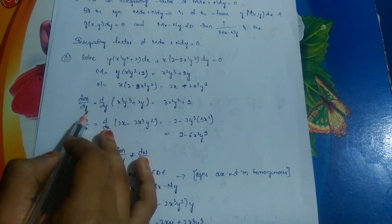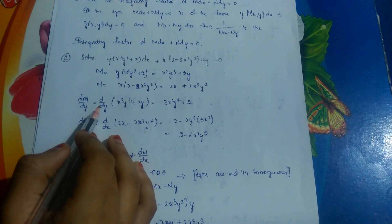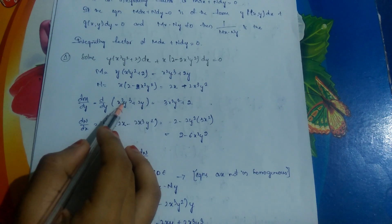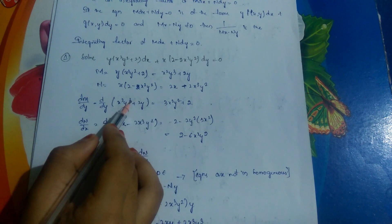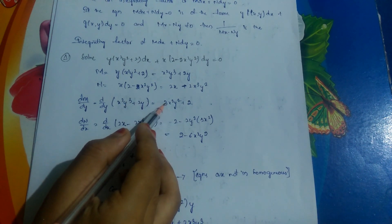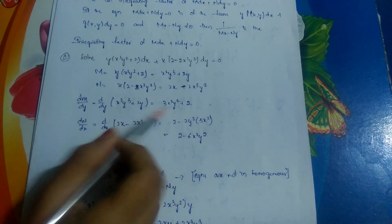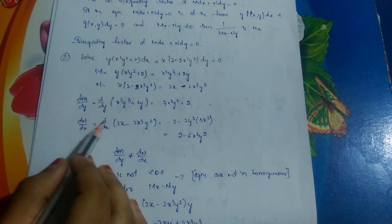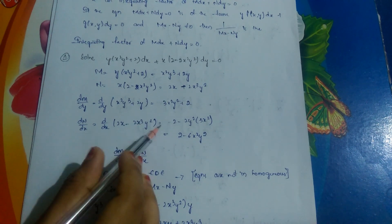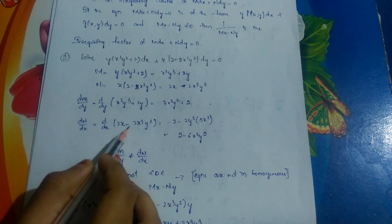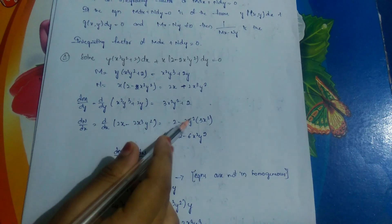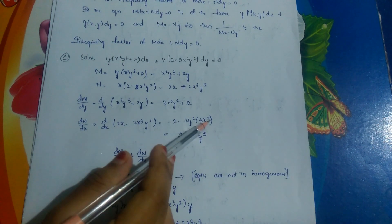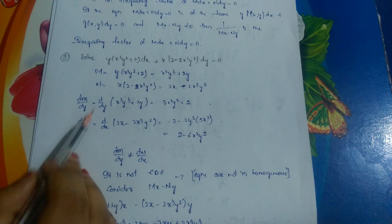Differentiate M with respect to y: ∂M/∂y = ∂/∂y(x²y³ + 2y). Since x² is constant, differentiating y³ gives 3y², so we get 3x²y² + 2. Then differentiate N with respect to x: ∂N/∂x = ∂/∂x(2x - 2x³y²). Differentiating 2x gives 2; with 2y² constant, differentiating x³ gives 3x², yielding 2 - 6x²y².